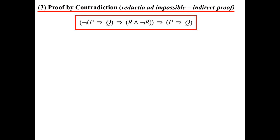Proof by contradiction — in Latin, reductio ad impossible. This is what we call an indirect proof, as opposed to a direct proof. The logical breakdown: if the negation of (P implies Q) implies both R and not-R — remembering something can't be both true and false — that's our contradiction. So what I started with can't be right, meaning P implies Q must be true.